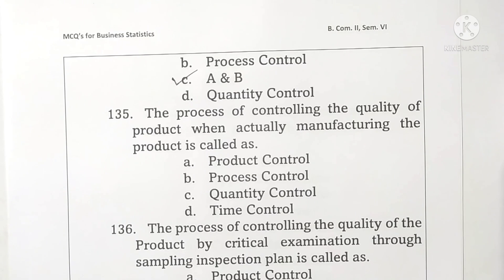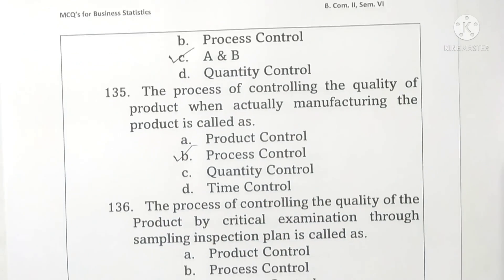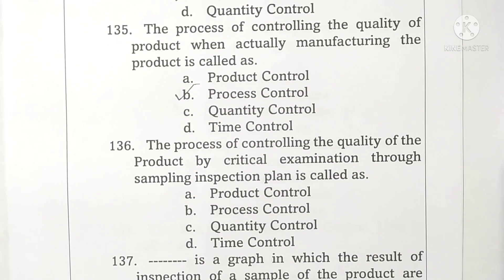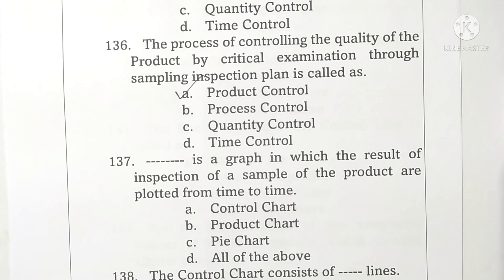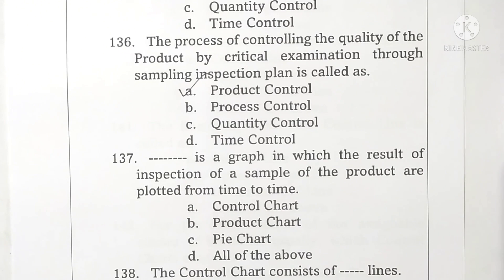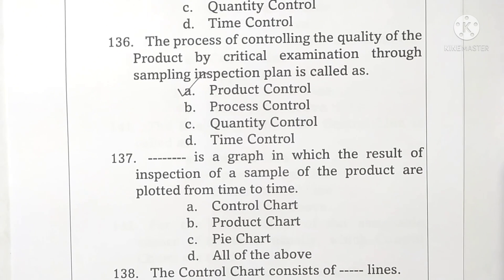Question 135: the process of controlling the quality of the product during actual manufacturing is called process control. Option B is correct. Question 136: the process of controlling the quality of the product by critical examination through sampling inspection plan is called product control. Option A is correct.